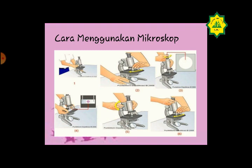Keempat, siapkan preparat yang akan diamati dan letakkan pada meja; atur bagian yang akan diamati tepat di tengah lubang meja preparat, lalu jepitlah preparat dengan penjepit objek. Selanjutnya, atur fokus untuk memperjelas gambar dengan cara memutar makrometer secara perlahan sampai lensa objektif berada pada posisi terdekat dengan meja preparat. Setelah preparat terlihat, untuk memperoleh perbesaran kuat, gantilah lensa objektif dari 10x, 40x, hingga 100x dengan cara memutar revolver hingga terdengar bunyi klik; usahakan agar posisi preparat tidak bergeser.